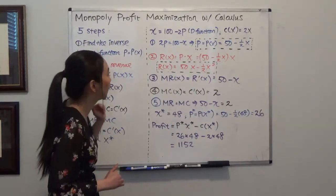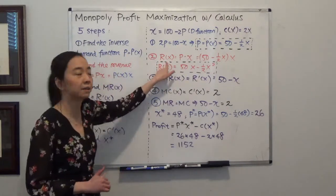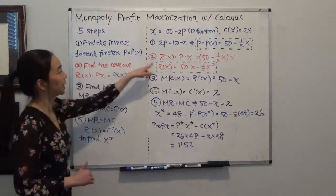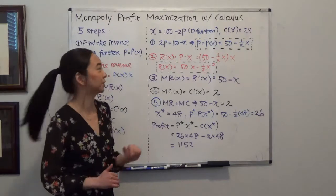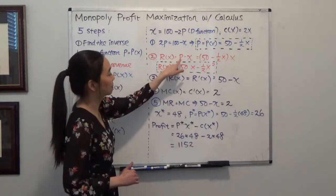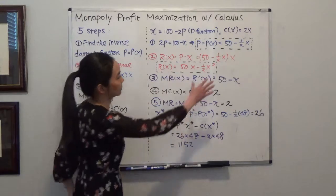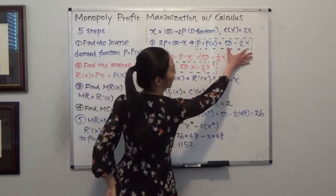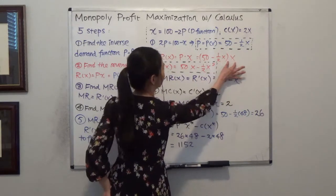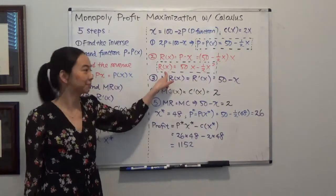Now multiplying my price and quantity to find my total revenue. Revenue is a function of x — that's price times quantity. My price is the function I just found, so price times quantity gives me the revenue function.